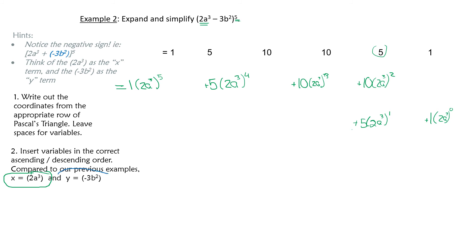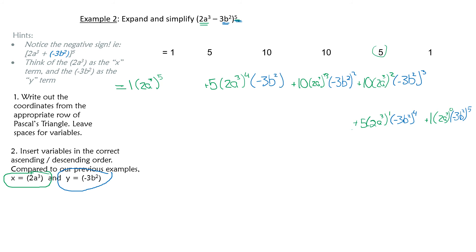Now the second part: insert the y term, which is negative 3b squared. Starting at the very end, it has power 5 at the far right. So going from right to left descending in power: (negative 3b squared) to the 5, then to the 4, then to the 3, then to the 2, then to the 1, and finally (negative 3b squared) to the 0.